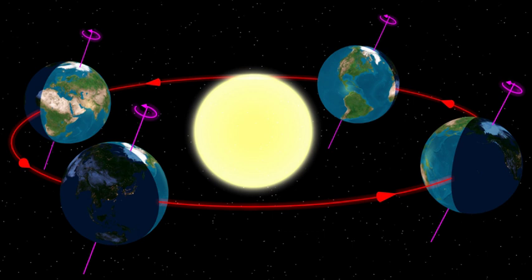Objects orbiting the Earth must be within this radius, otherwise they can become unbound by the gravitational perturbation of the Sun.